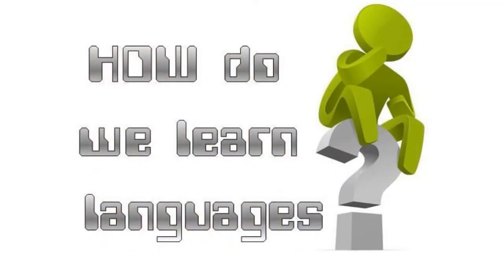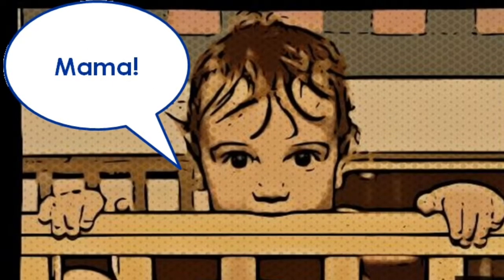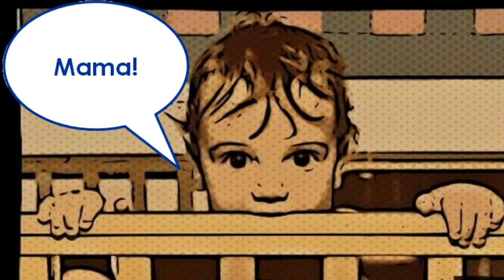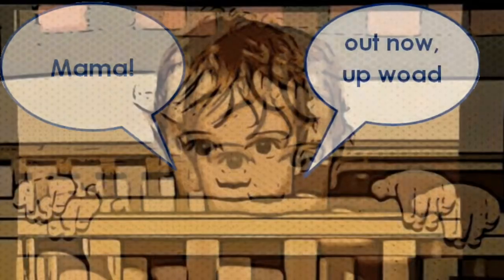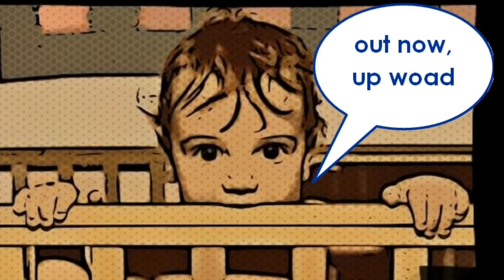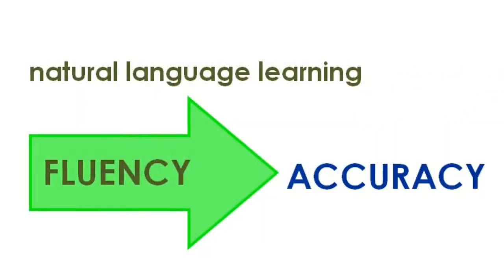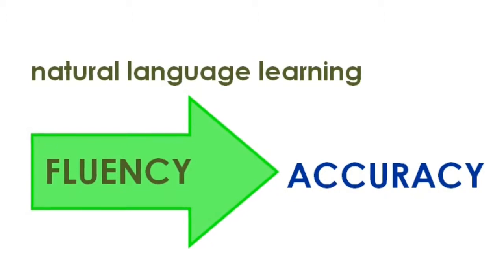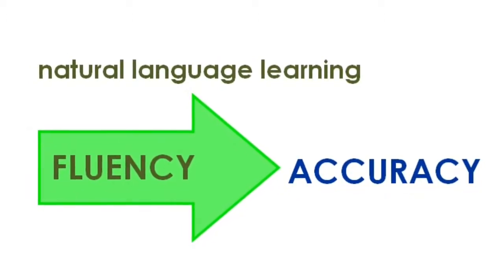Now let's have a quick look at how we learn languages, because this should inform our teaching as well. We start with individual words, then progress to combining words in very simple but usually grammatically inaccurate sentences. Summed up very simply, the language learning journey goes from fluency to grammatical accuracy, which is a late acquired skill in the learning process.